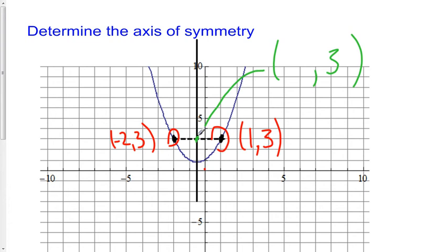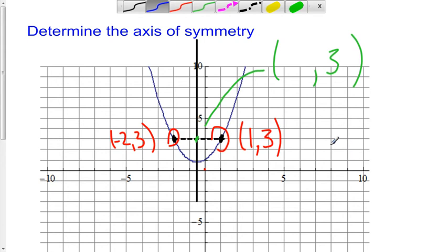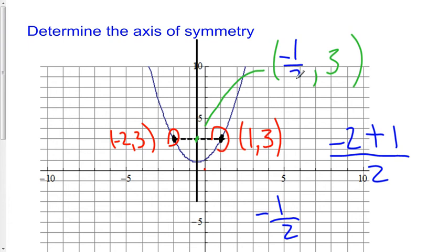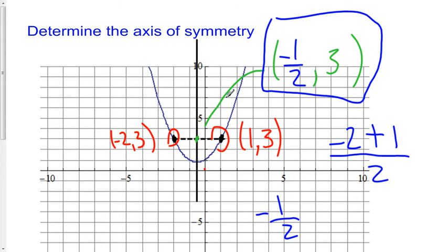How am I going to determine what the midpoint is? I'm going to take the X coordinate of one of the points, negative 2, add to it the X coordinate of the other point, 1, and divide that by 2. In other words, I'm going to take the average of those two points. So I get negative 2 plus 1 is negative 1, and negative 1 over 2 is negative one half. So my coordinate here is negative 1 over 2. I was able to determine that point using the fact that the axis of symmetry must be equidistant, using two points at the same height.